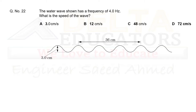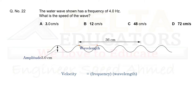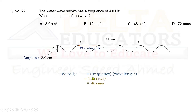Question 22: A water wave has a frequency of 4 Hz. The total distance shown spans 3 complete wavelengths over 36 cm, so wavelength = 36 ÷ 3 = 12 cm. Using velocity = frequency × wavelength: v = 4 × 12 = 48 cm/s. 48 cm/s is given in option C. Correct option is C.